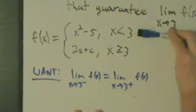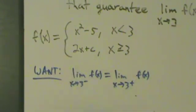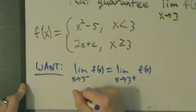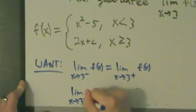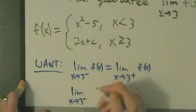Alright, so on the left-hand side of this equation here, what we really have is the limit as x approaches 3 from the left of this first piece, which is x squared minus 5.